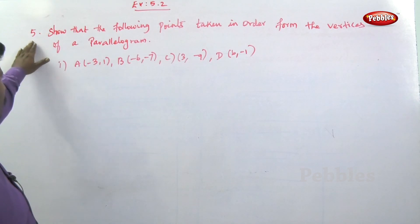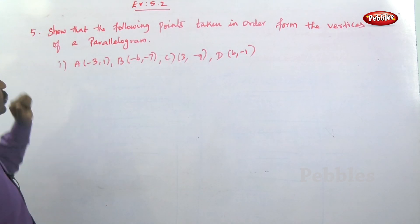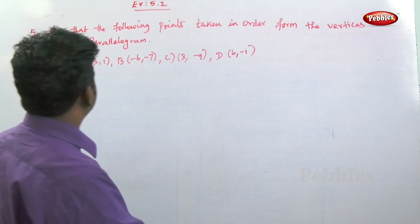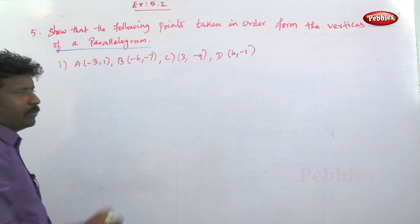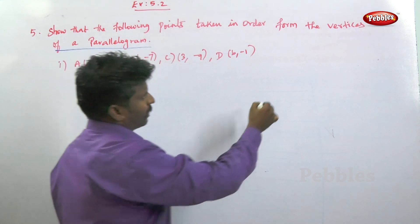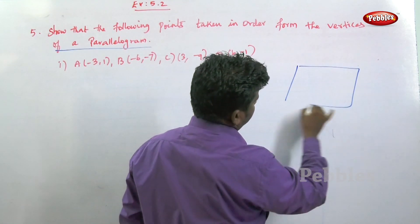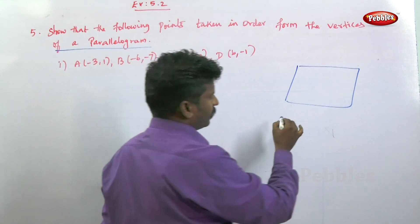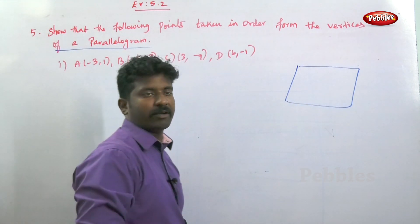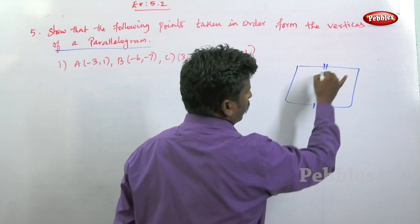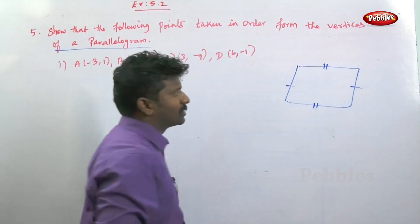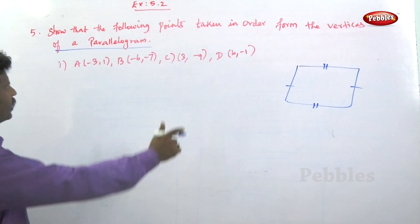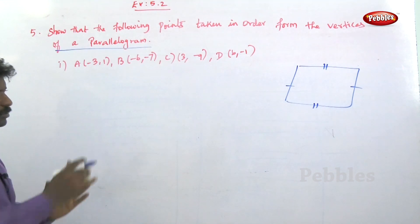See the next problem, question number five: show that the following points taken in order form the vertices of a parallelogram. The main property of a parallelogram is that the opposite sides are equal. Now we have to take sides AB, BC, CD, and DA.